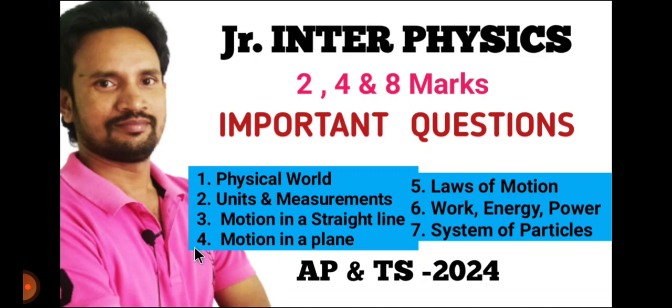There are 7 units in physics: physical world, units and measurements, motion in a straight line, motion in a plane, laws of motion, work, energy and power, and system of particles.